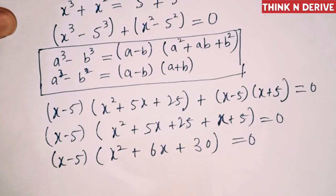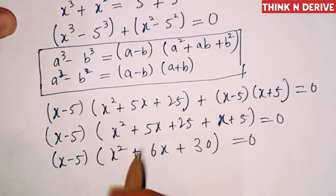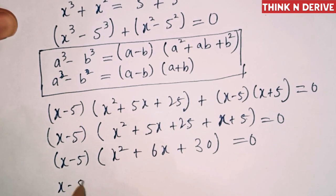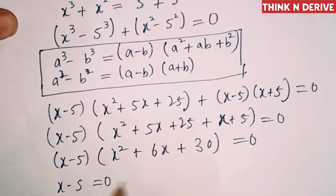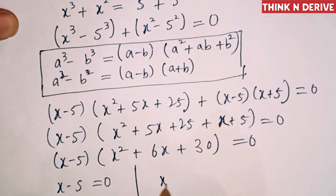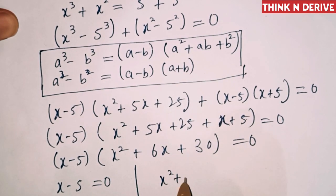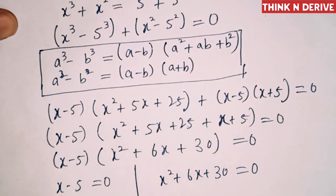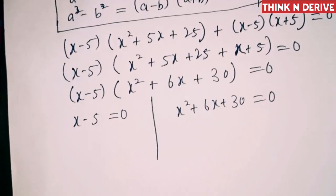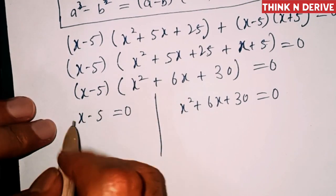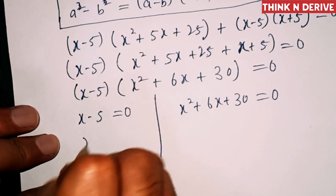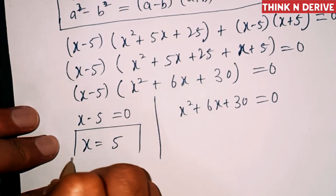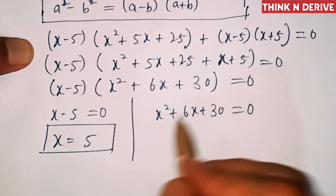Now here we have two factors, so either x - 5 = 0, or x² + 6x + 30 = 0. From the first factor, x = 5, so this is our first solution. The other two solutions we'll find from the quadratic equation.